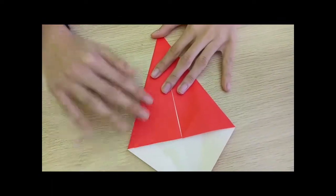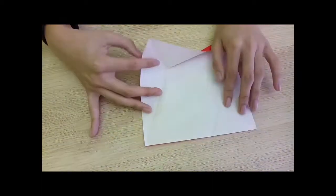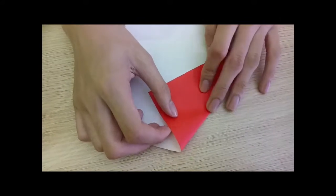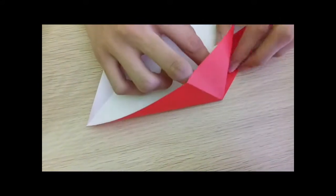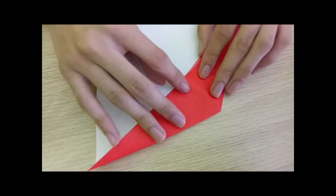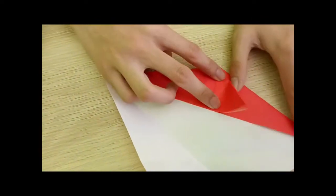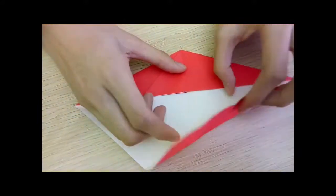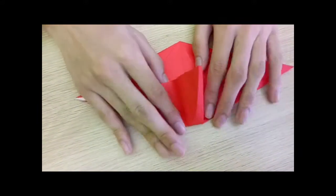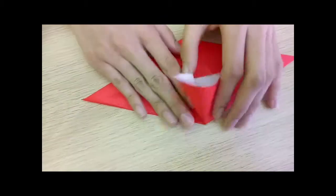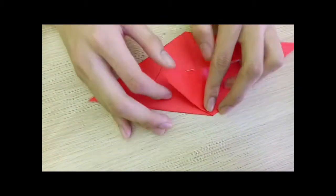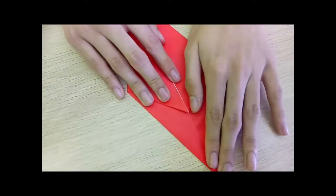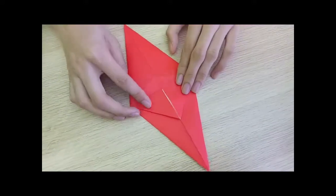So now what you want to do is open it up and you have these creases. What we're trying to do is fold it like this again, but then bring the creases to make it look like this. If you want an easier way to do it, you can just fold it both at the same time, leaving one triangle upwards, then just folding it like that.